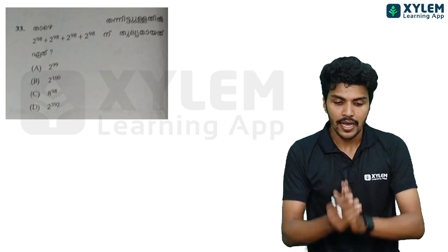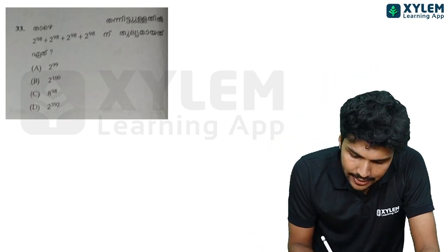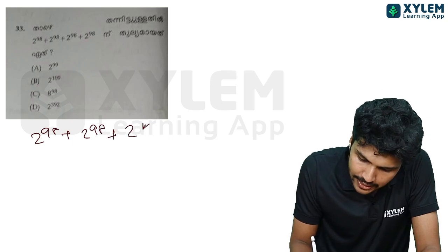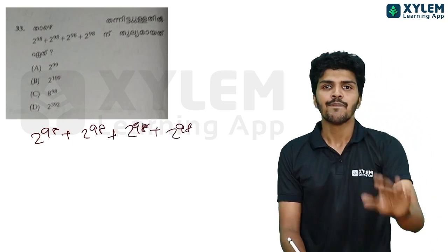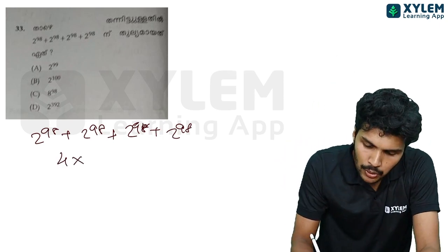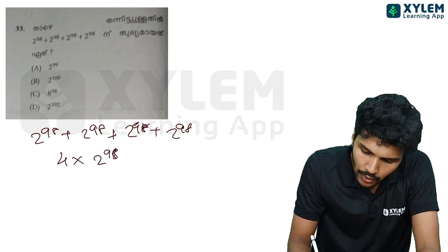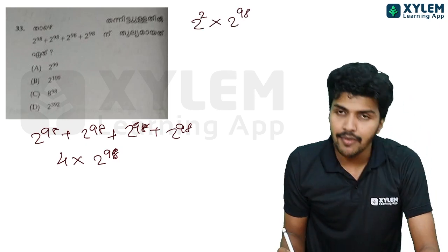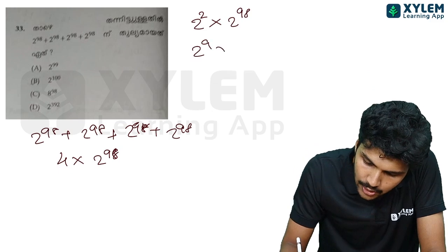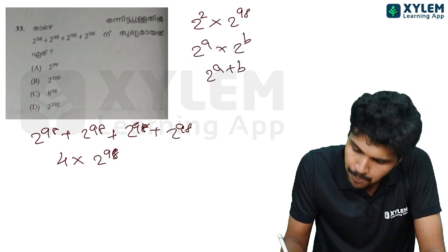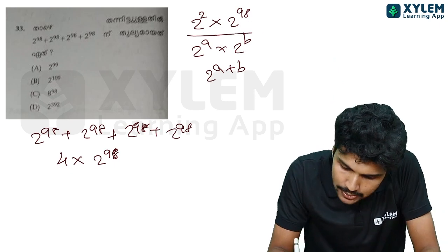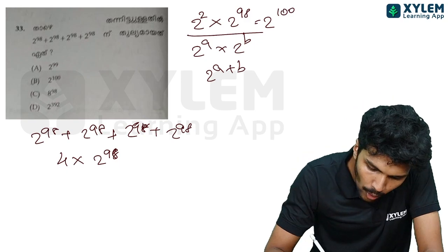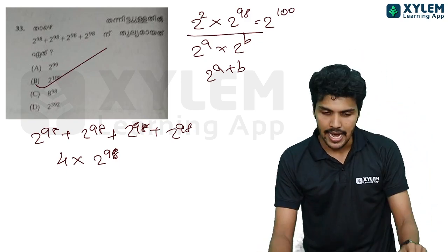Ok, question 32 is going to change, next is 34. 2 raise to 98 plus 2 raise to 98 plus 2 raise to 98 plus 2 raise to 98 plus 2 raise to 98, which simplifies to 2 raise to 100. B is the right answer.